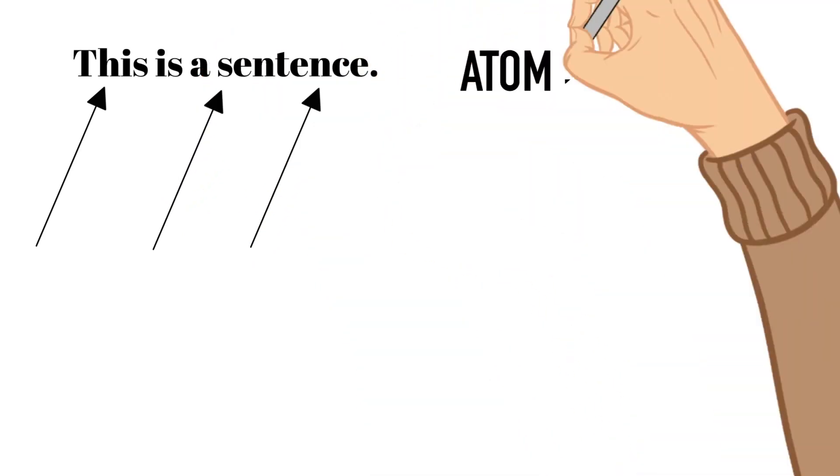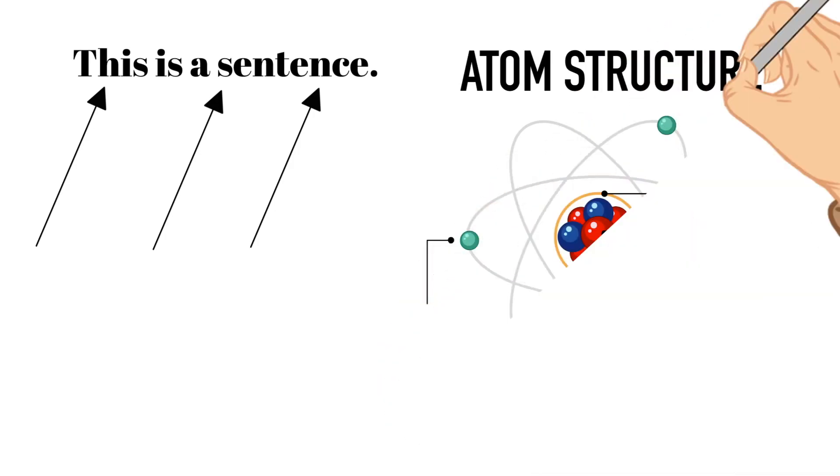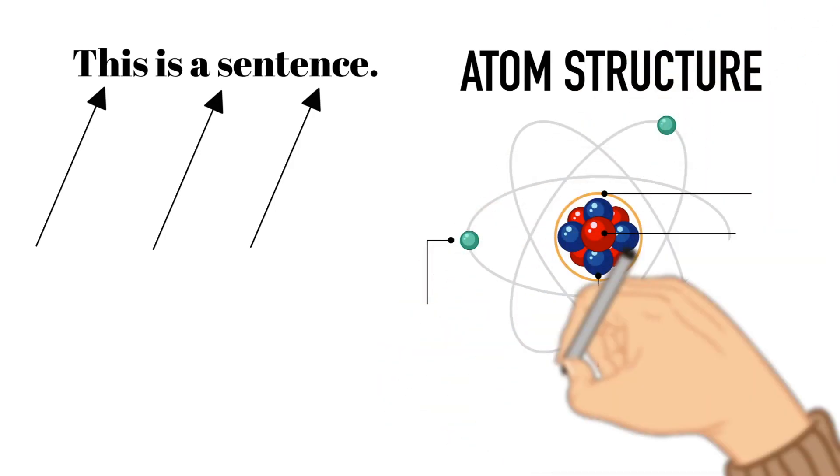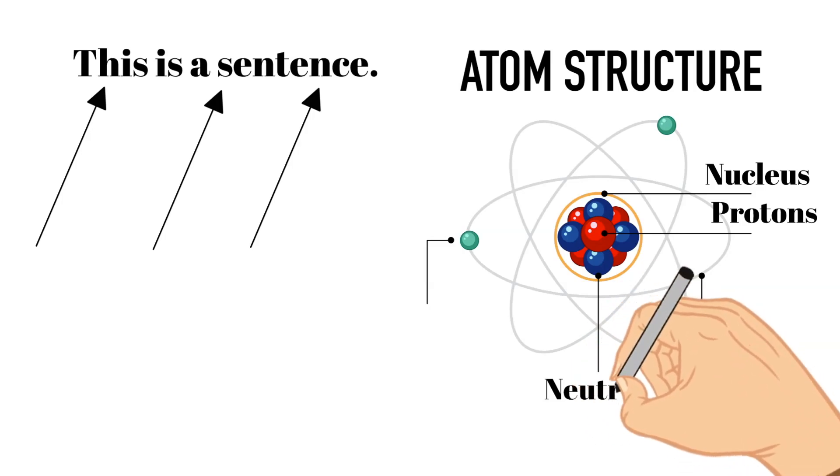So let's go ahead and break the atom down and go through each of its parts one by one. Let's start in the nucleus. The nucleus is located in the center of the atom and it is made of the smaller parts called protons and neutrons.